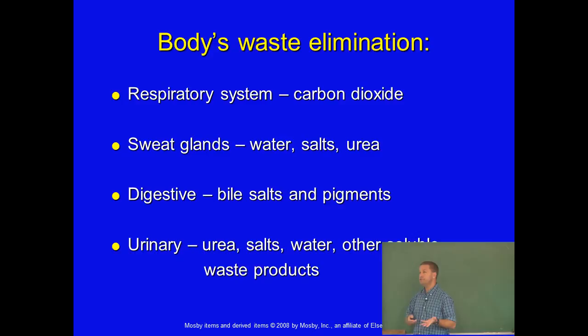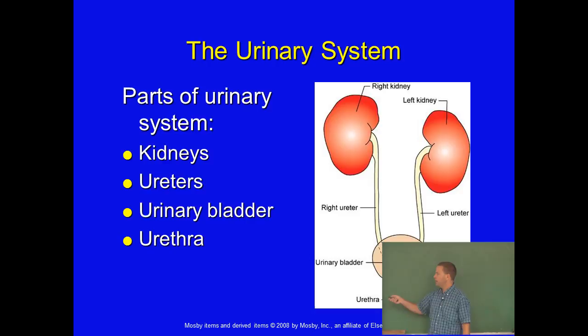Parts of the urinary system: there are the kidneys, which are connected to the urinary bladder via ureters. The urinary bladder drains urine out through the urethra.